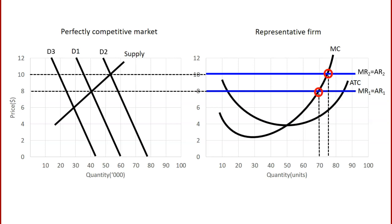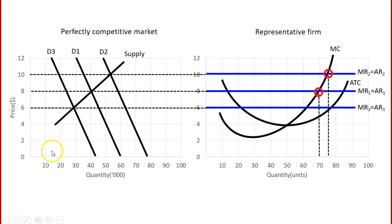If we decrease demand and the demand curve shifts to the left, the equilibrium price falls to $6. Correspondingly, the marginal and average revenue curve for the individual firm shifts downwards to $6 as well. The optimal output will be where marginal revenue equals marginal cost, which will now be lower — at approximately 62 units.